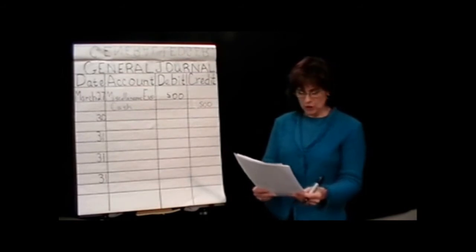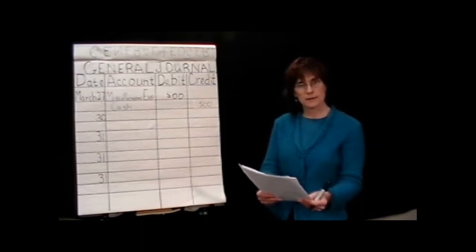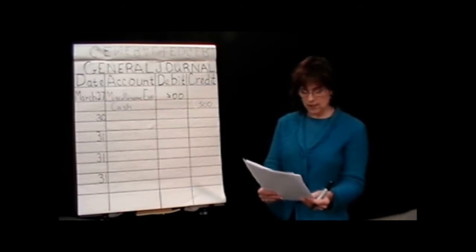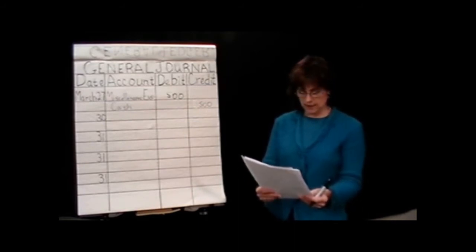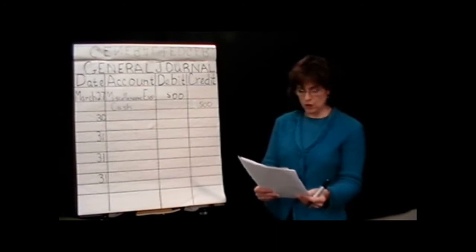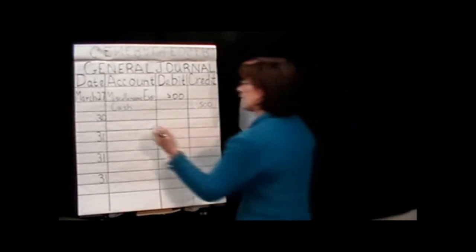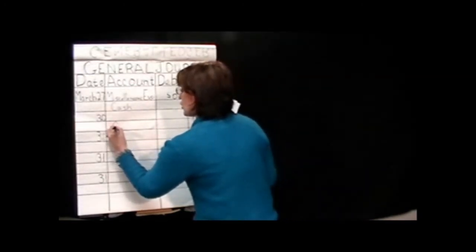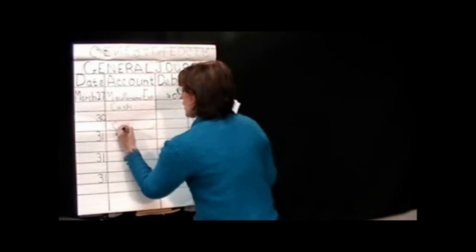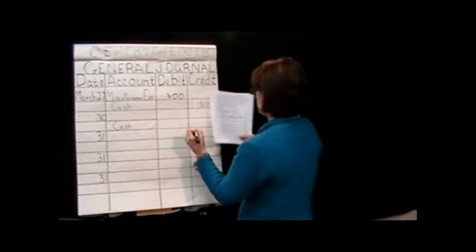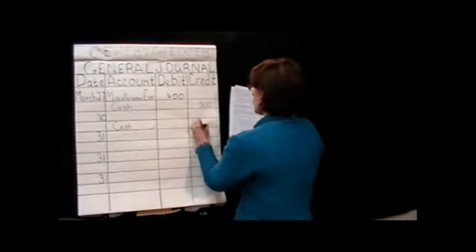Then we go down to the 30th, on March the 30th, it says we paid the telephone bill for the month. So again, here we're paying. We're paying with cash, right? And cash is increasing or decreasing? It's decreasing. And decreases in cash are recorded by, which is an asset, are recorded by credits. Credits go on the second line. So I'm going to go ahead and put that in first, but let's be thinking about the other side of that and what it might be.